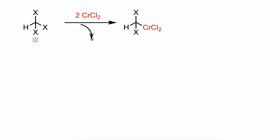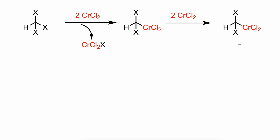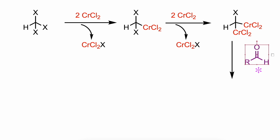The haloform reacts with two equivalents of chromium chloride, and the chromium-2 species is oxidized to chromium-3. This generates a geminal dichromium species that is nucleophilic and attacks the aldehyde in a 1,2 addition.